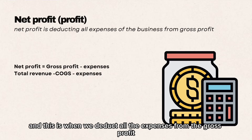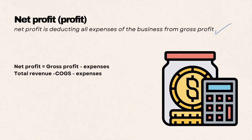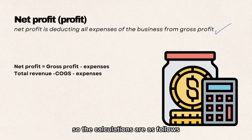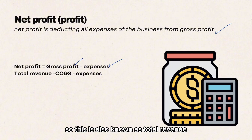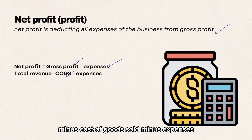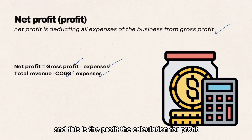Next we have net profit — this is when we deduct all expenses from gross profit. The calculation is: net profit equals gross profit minus expenses, which is also the same as total revenue minus cost of goods sold minus expenses. This is the full profit calculation.